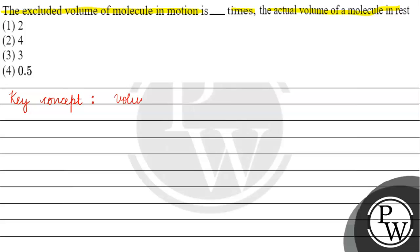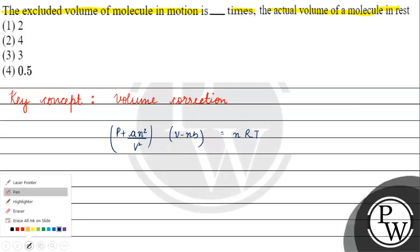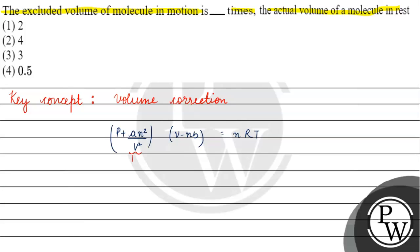Volume correction. So this is the ideal gas situation, because we have no real gas situation. This is why we have to change the ideal gas equation. So this is the pressure correction.